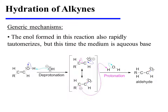This anti-Markovnikov enol will now also rapidly tautomerize. But this time, the medium is aqueous base, and so the mechanism for tautomerization must be a bit different than it was in aqueous acid. The tautomerization begins with the deprotonation of the hydroxyl group, and this affords an anion that is resonance stabilized. The electrons can be pushed onto the secondary carbon.